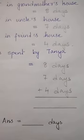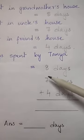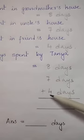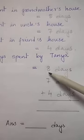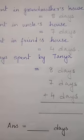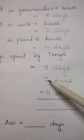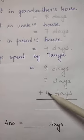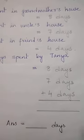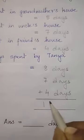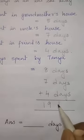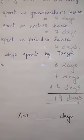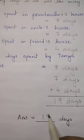According to the vertical method of addition, you have to add 8 plus 7 first. 8 plus 7 is 15. Then again 15 plus 4 — how much is 15 plus 4? 15 plus 4 is 19. So let's write 19 days. Your answer here will be 19 days.